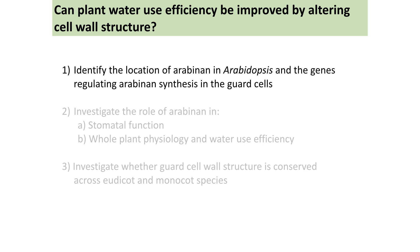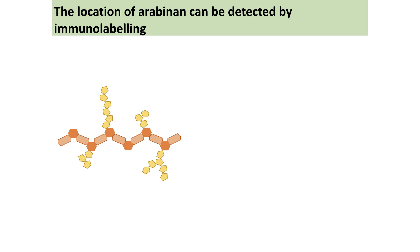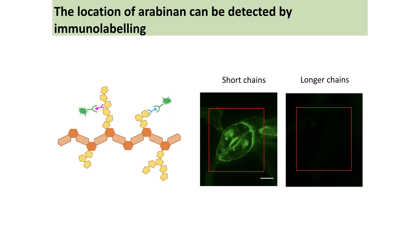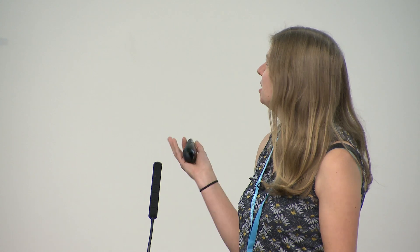First, we checked where arabinan was located within the plant using immunolabelling, which uses specific antibodies — one binding short chains of arabinan and one binding longer chains. We apply these to thin tissue sections, then add a secondary antibody with a fluorescent tag to produce a green signal where the component is present. With the short-chain antibody we get very strong signal around the guard cell, largely guard-cell-localized with little signal elsewhere in the epidermis. With the longer-chain arabinan antibody we see no signal at all. This suggests that short chains of arabinan are more specifically important in guard cells.